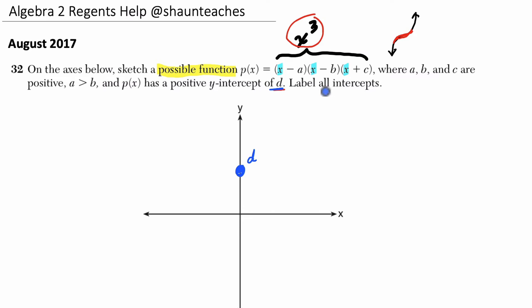They say label all intercepts. I don't know if they need us to label it as a point, but I'm going to label it as a point. I'm going to say it's the point 0, d. So let's do that with my pen. 0 is my x-value. We're not going anywhere on the x-axis and d in the y-axis.